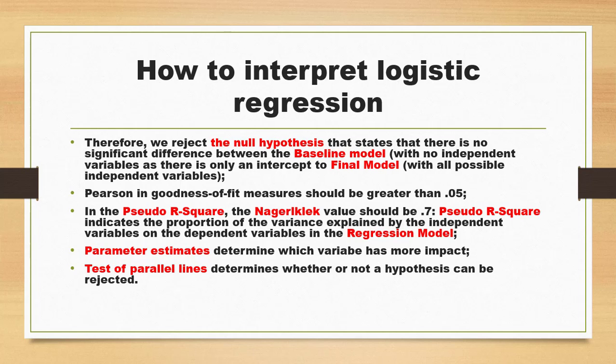The pseudo R-square indicates the proportion of variance in the dependent variable explained by the independent variables in the regression model. The parameter estimates determine which variable has more impact. The test of parallel lines determines whether or not the hypothesis can be rejected. These are the major output parameters used in ordinal logistic regression.